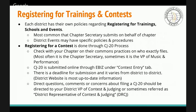For registering for a contest, it's done through what's called the CJ20 process. Check with your chapter on common practices for who files the CJ20 — most often it's the chapter secretary, but sometimes it's the VP of Music and Performance. A CJ20 is submitted online through eBiz under the Contest Entry tab. There is a deadline for submission that varies from district to district; the district website usually has the most up-to-date information. Questions about filing a CJ20 should be directed to your district vice president of contests and judging, or DRCJ.